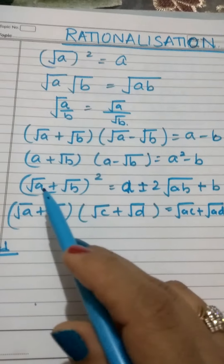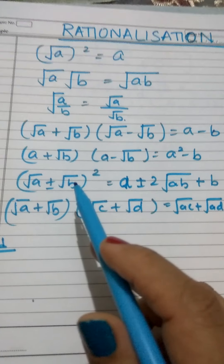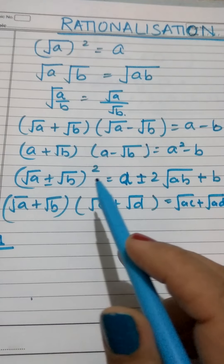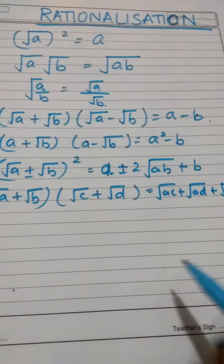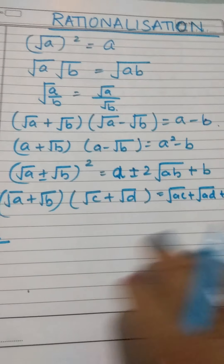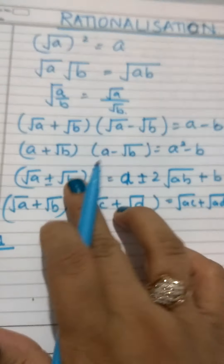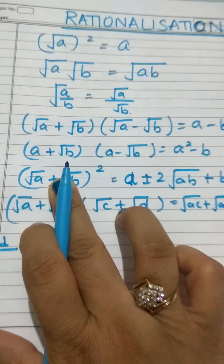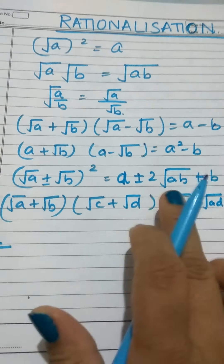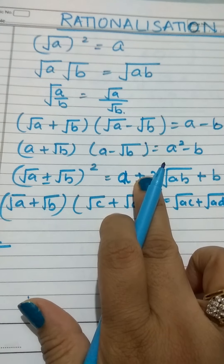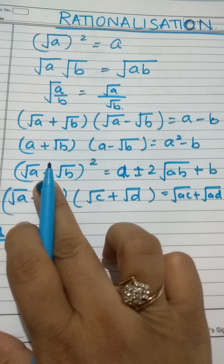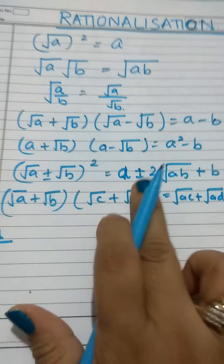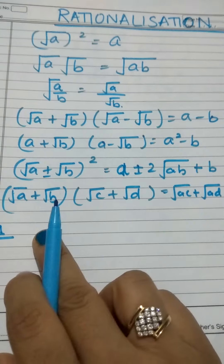Here the (a+b)² identity will be applied. Thus, squares and square roots get cancelled and the rest remains as it is. If the sign is positive here, then this will also be positive. If there is a minus sign here, this will be minus.